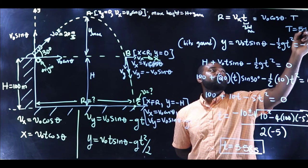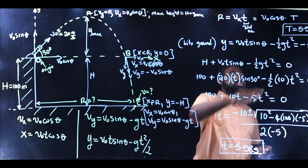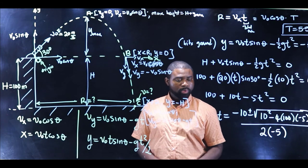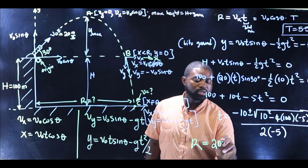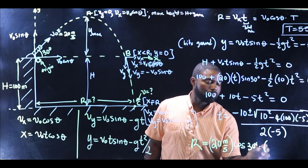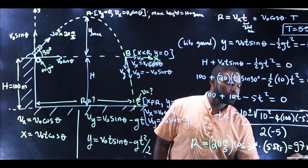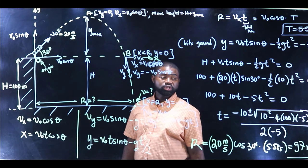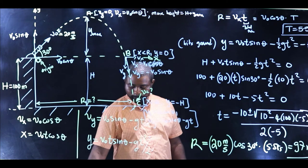Solving this quadratic equation gives t equal to 5.58 seconds. This is the total time of flight. We can now use this to calculate the range R. R equals v-naught cosine theta times t, which equals 20 times cosine 30 times 5.58, giving approximately 97 meters. So the horizontal range of this projectile motion is about 97 meters.